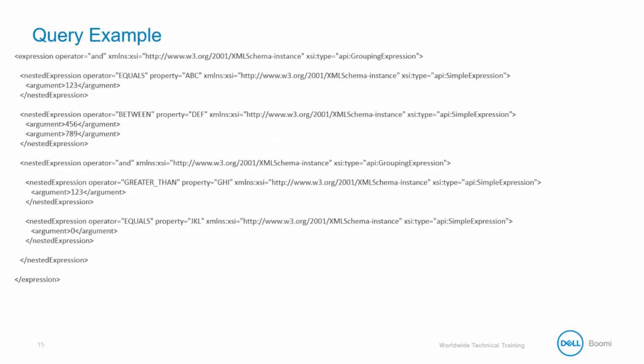Here is an example of a query. Even if you're not familiar with the query syntax, you can look at the hierarchical structure and the keywords for operator and argument to get a good sense of what's happening. In this example it is querying an expression that checks if ABC is equal to 123, if DEF is between 456 and 789, if GHI is greater than 123, and if JKL is equal to 0.